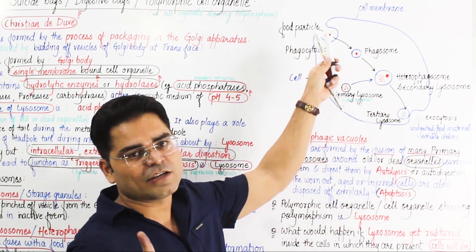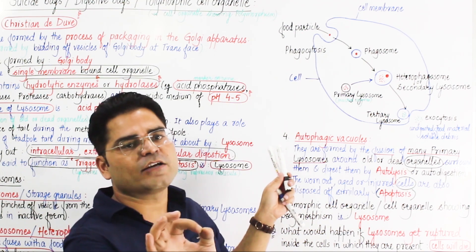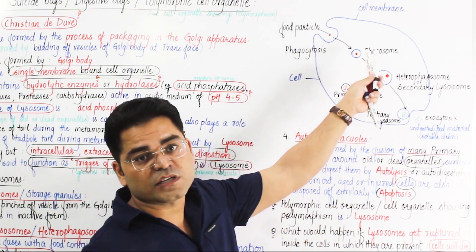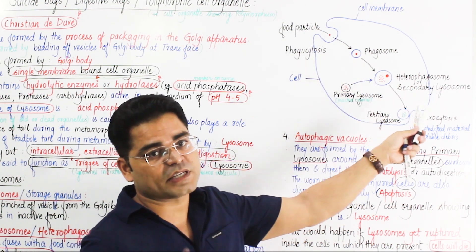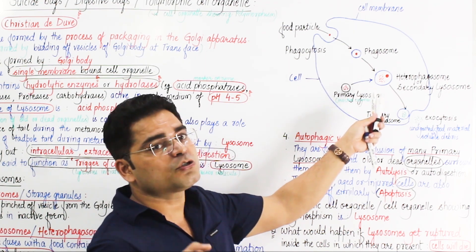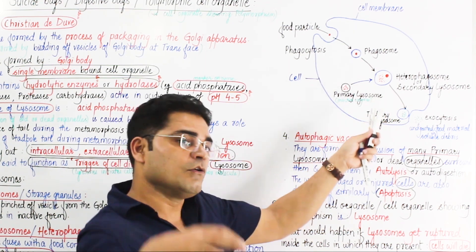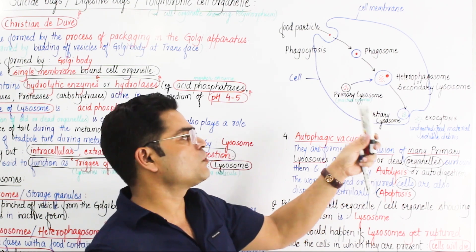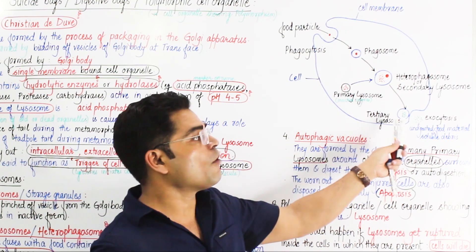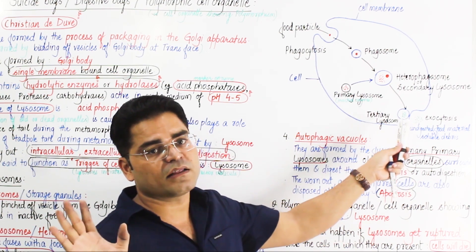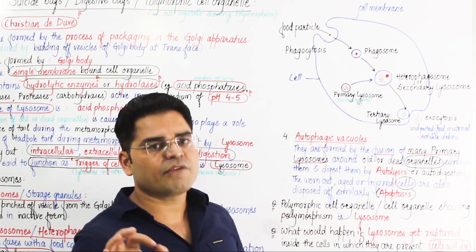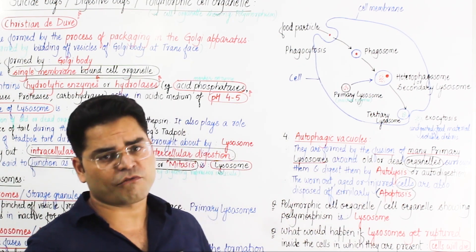If there is undigested food that cannot be processed, it is retained in the tertiary lysosome. The secondary lysosome performs digestion, leaving undigested food in the tertiary lysosome, which is then moved to the cell membrane and expelled by the process of exocytosis.